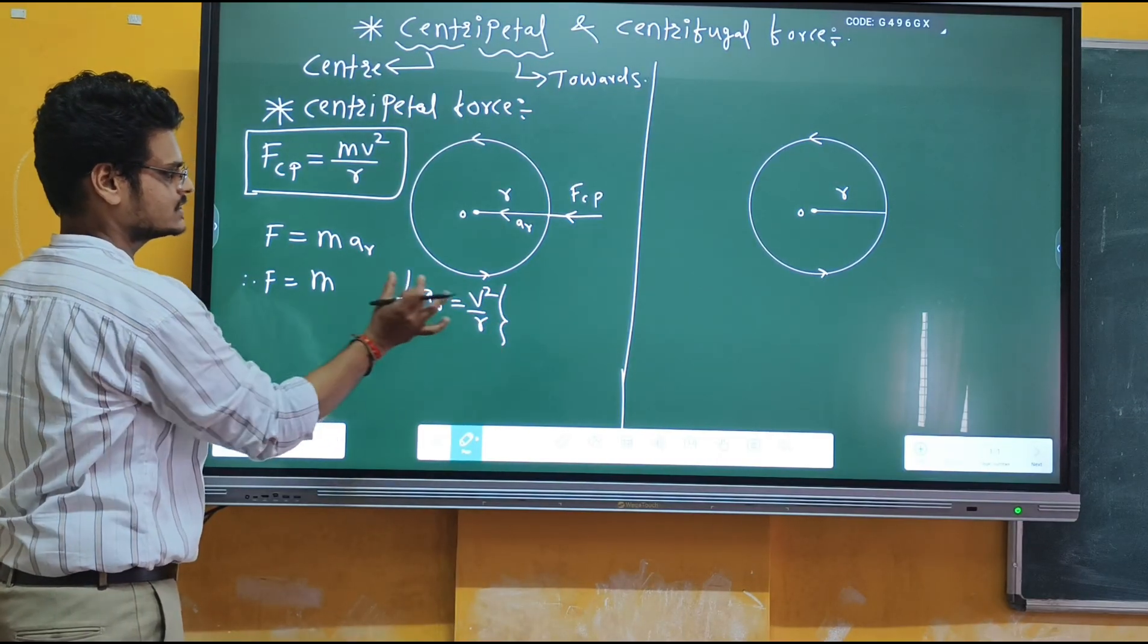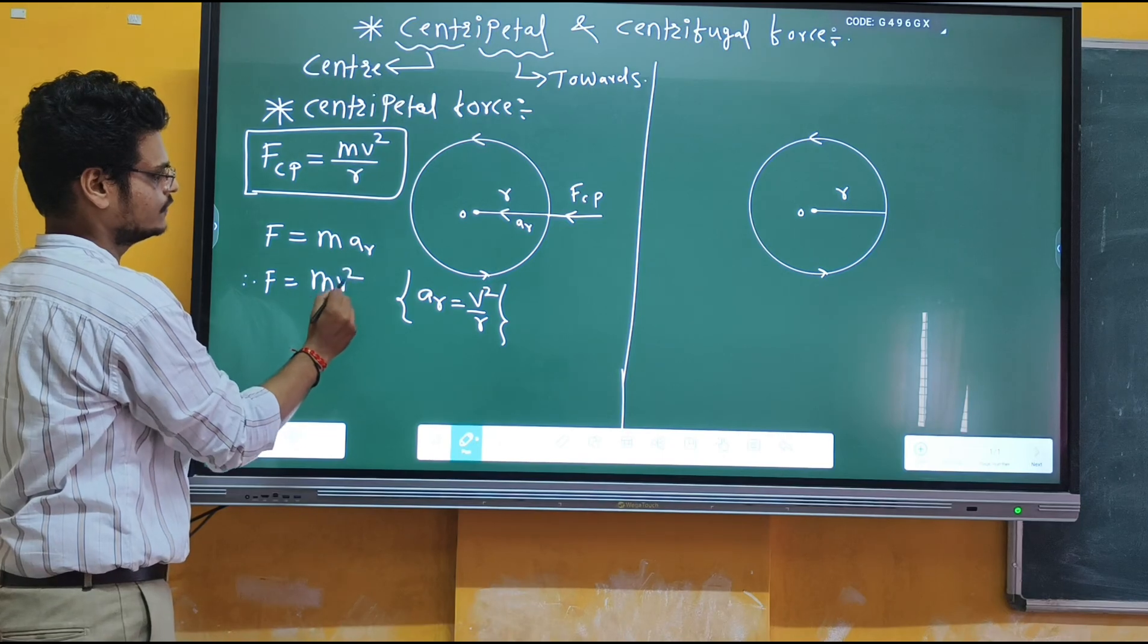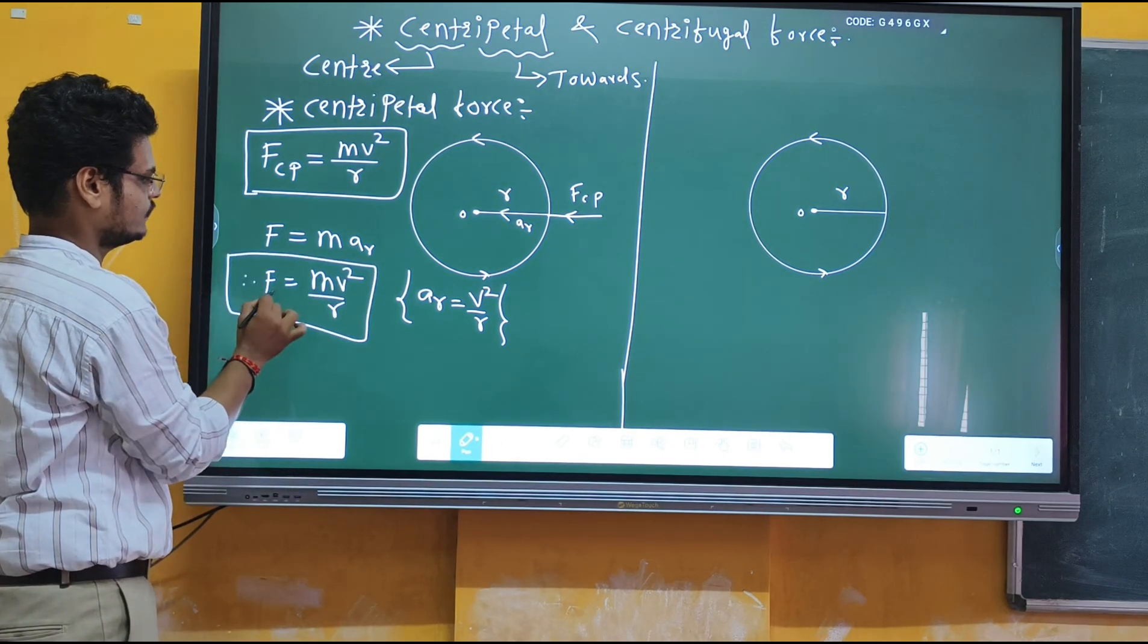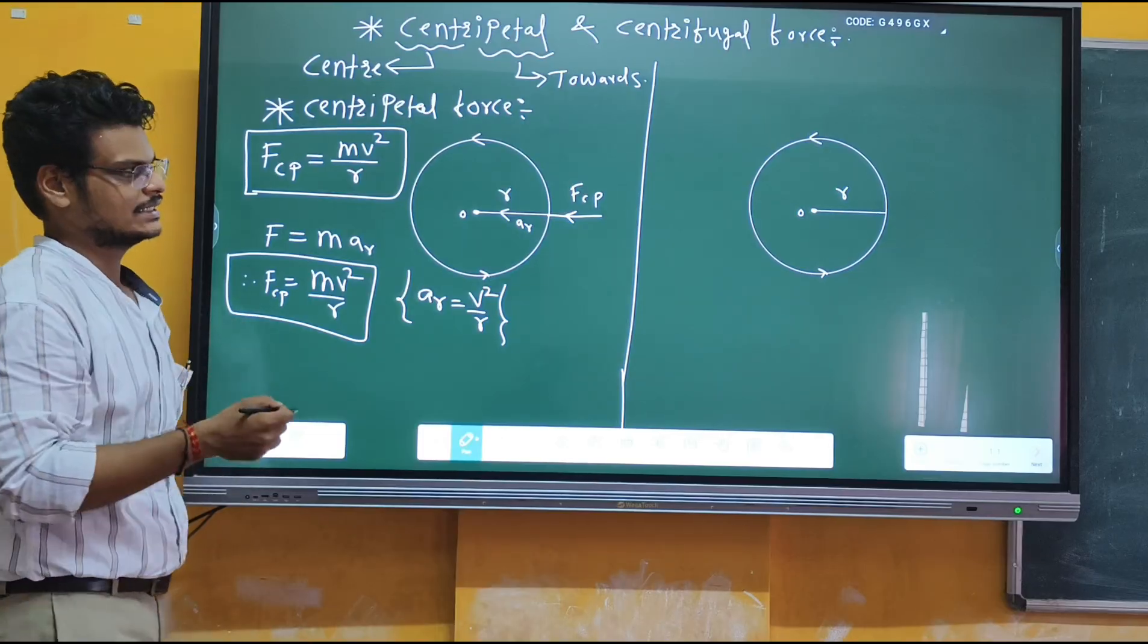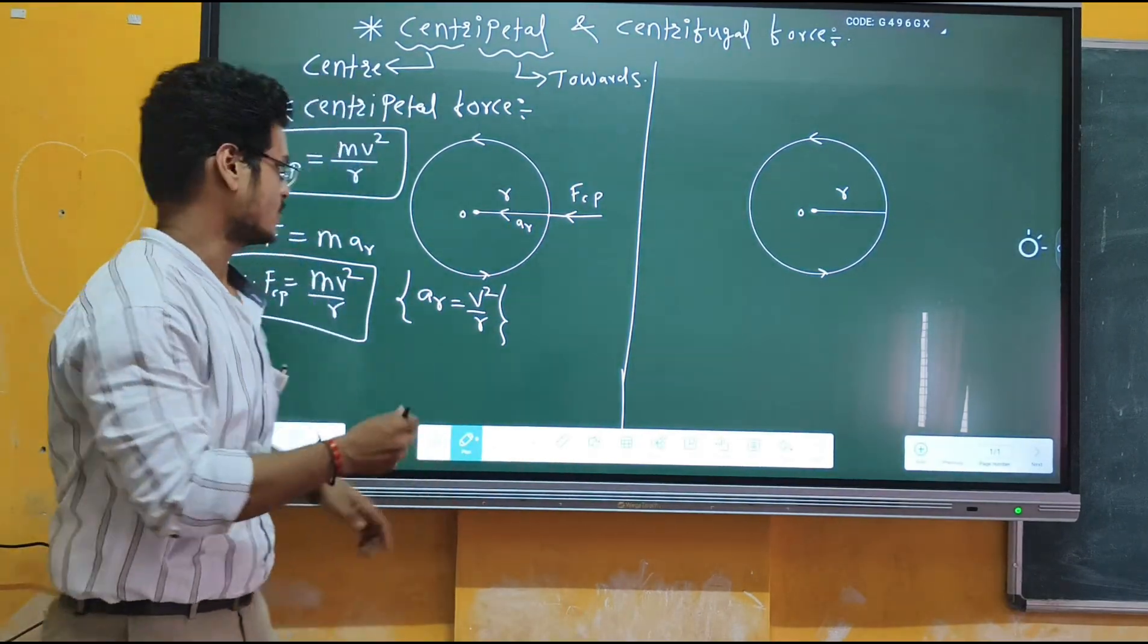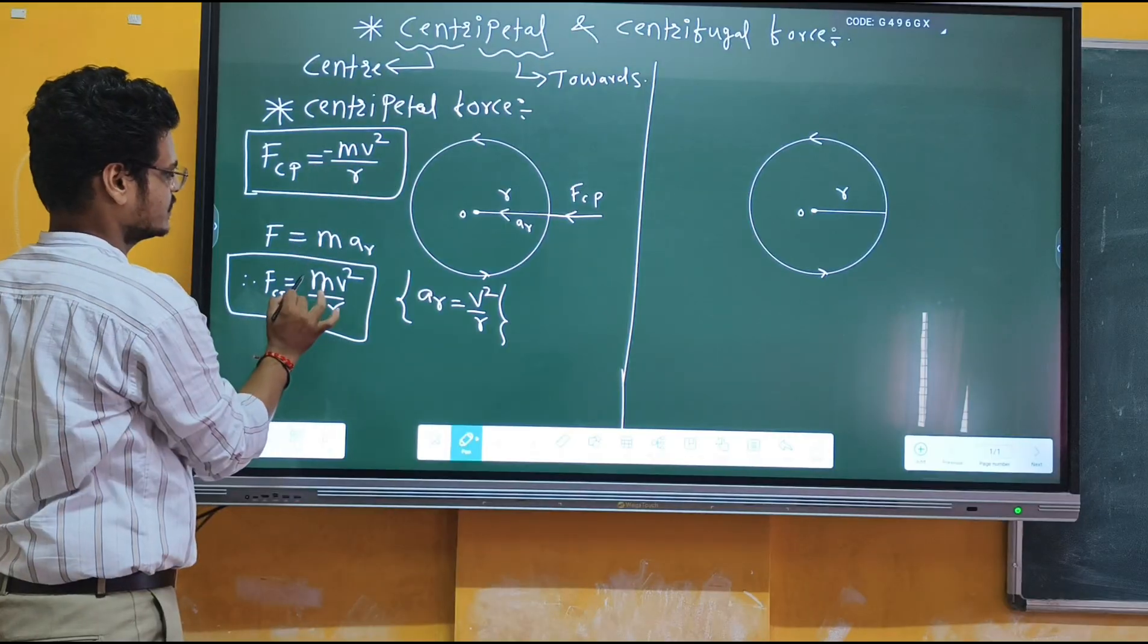I will substitute this value to get V²/R. This is how you get the formula for centripetal force. The radial acceleration and force act in opposite directions, so I will consider a negative sign here.